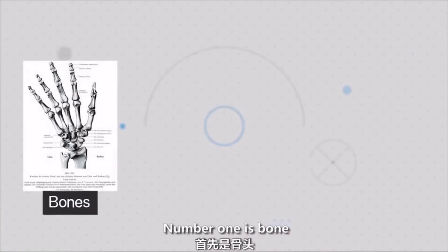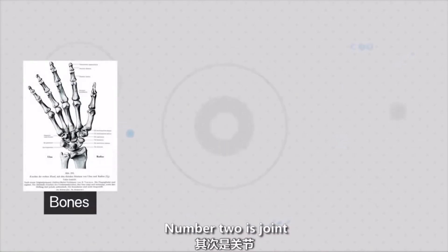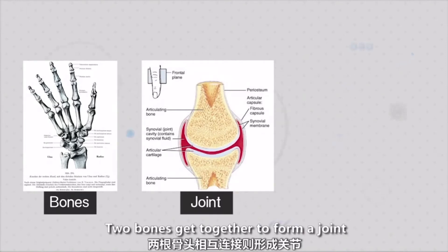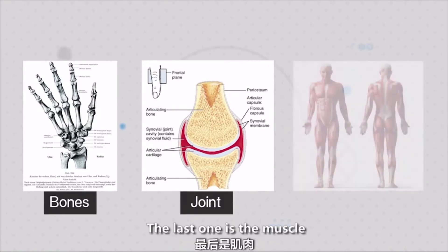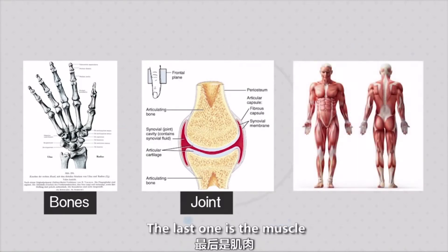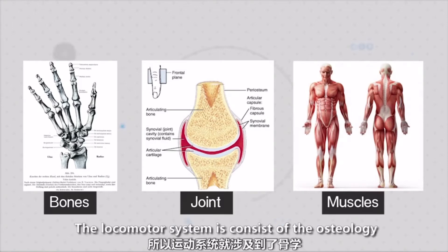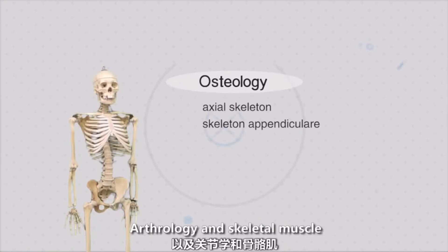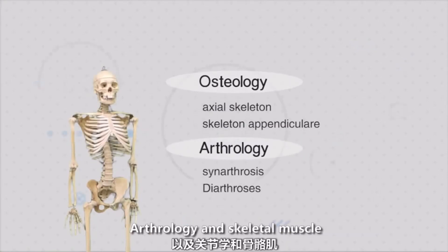Number one, that's the bones. Number two, we have the joints. So the two bones get together so they can move — that's the joints. And then the last one, we call the muscle. So the locomotor system consists of the osteology and the muscle.